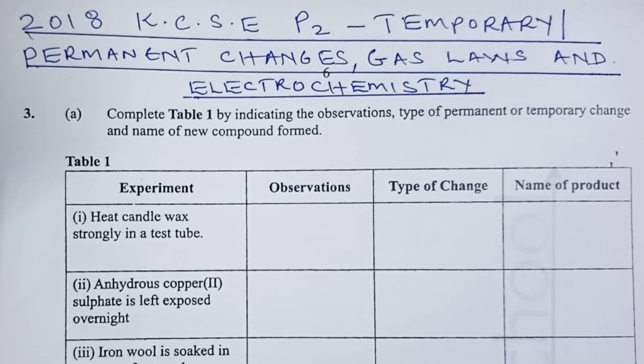Greetings and welcome to 2018 KCSE Chemistry Paper 2. Question 3 tested on temporary versus permanent changes. There was a bit of gas laws as well and electrochemistry. Join us as we go through the question.